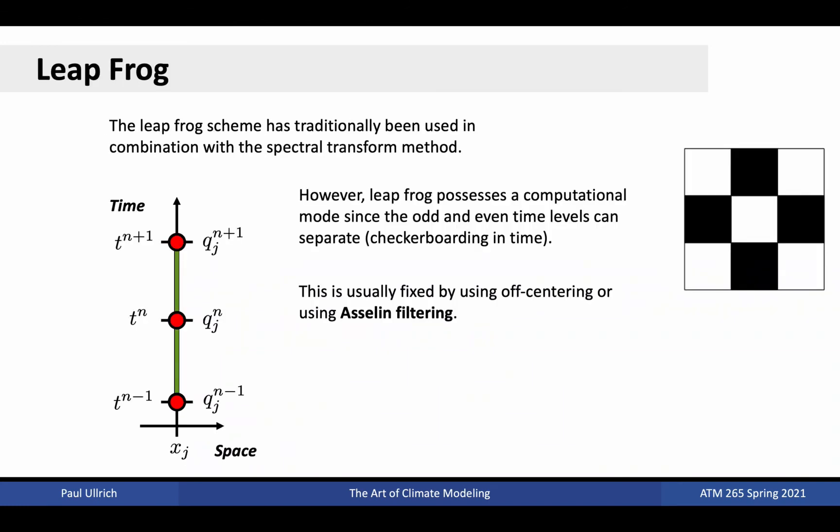As mentioned earlier, the leapfrog scheme was used for years in conjunction with the spectral transform method. However, the leapfrog scheme might also have reminded you of the central difference discretization we discussed in the context of spatial discretizations. In fact, much like that scheme produces a computational mode in space, leapfrog produces a computational mode in time since the odd and even time levels can separate from one another. The result is checkerboarding in time. This is usually fixed using what is known as off-centering, where instead of using the midpoint to evaluate the time tendency, we evaluate it using a point slightly closer to tn plus 1. The result is a first-order scheme with good accuracy properties where the checkerboarding effect is suppressed.